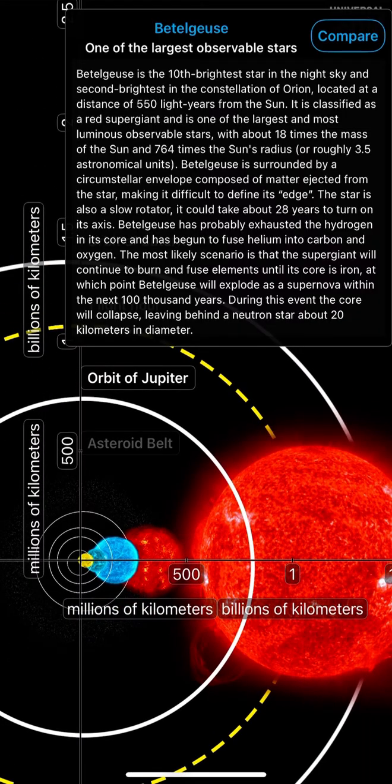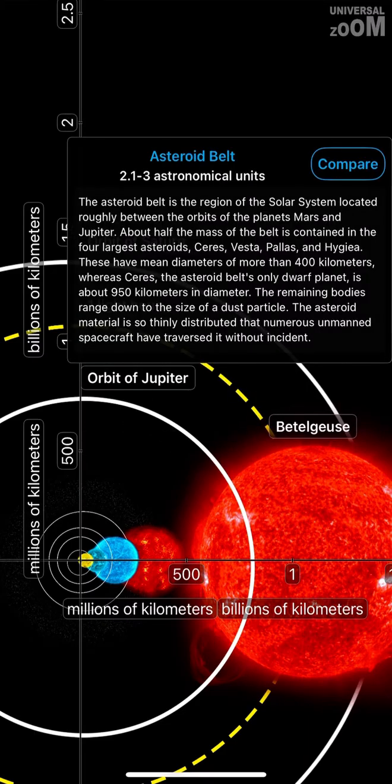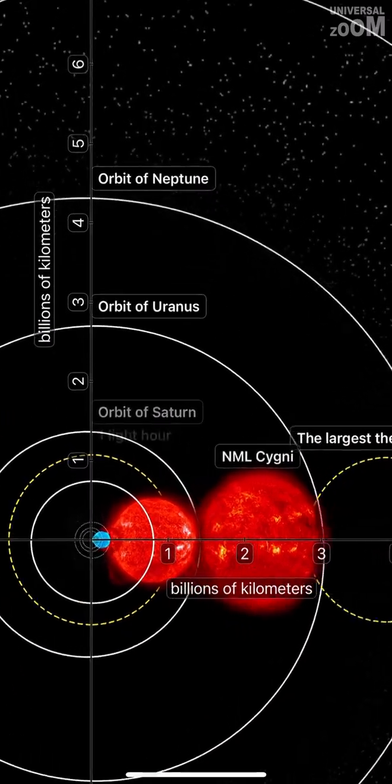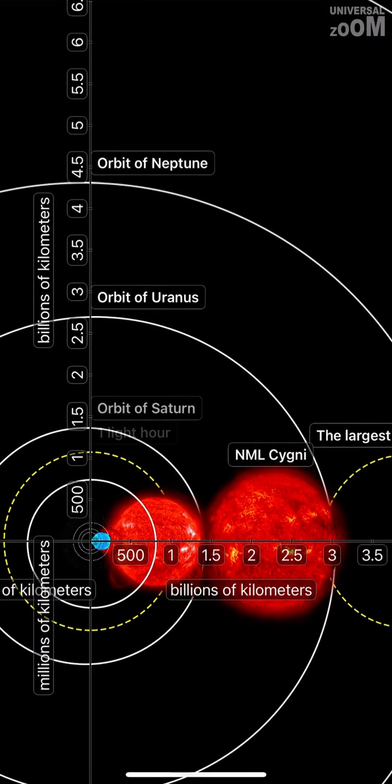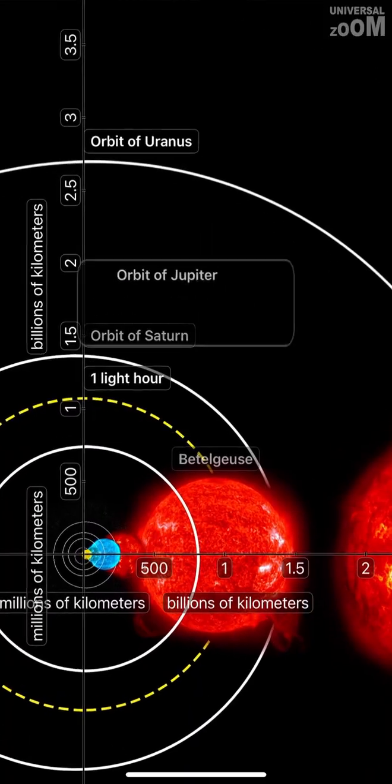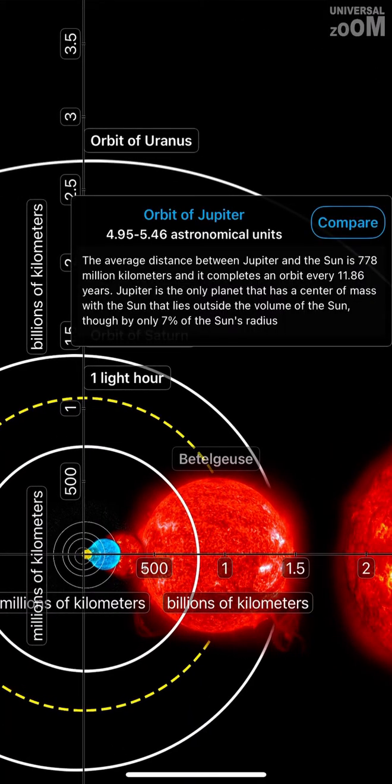Betelgeuse, one of the largest observable stars. Asteroid Belt, 2.1 to 3 astronomical units. Orbit of Jupiter, 4.95 to 5.46 astronomical units.